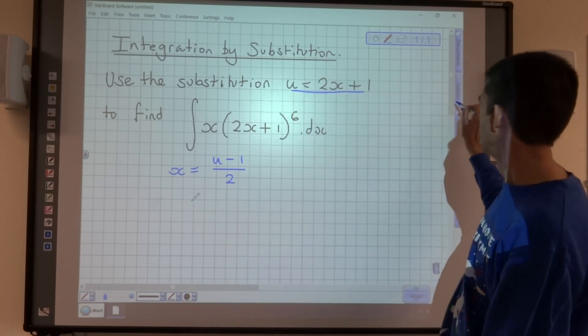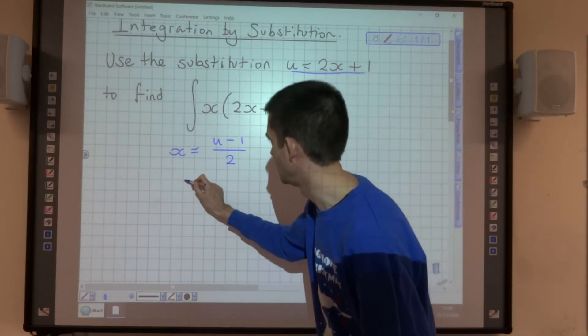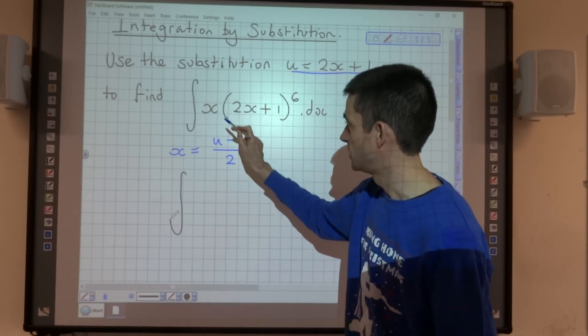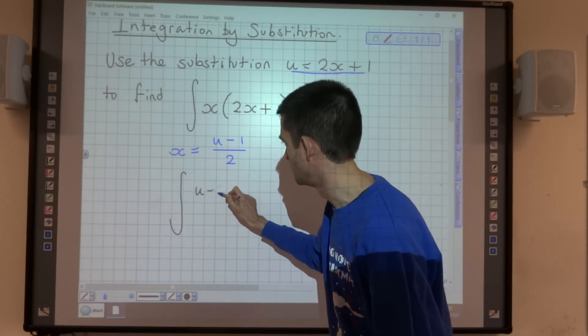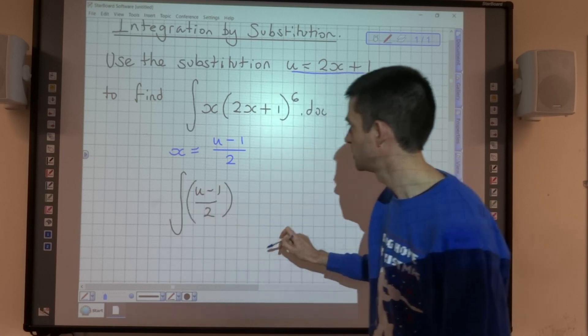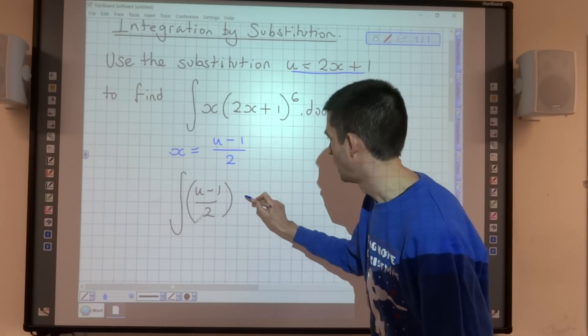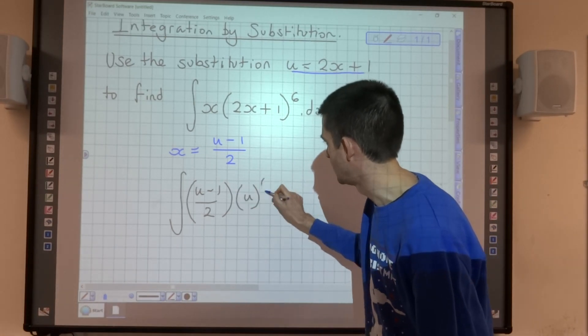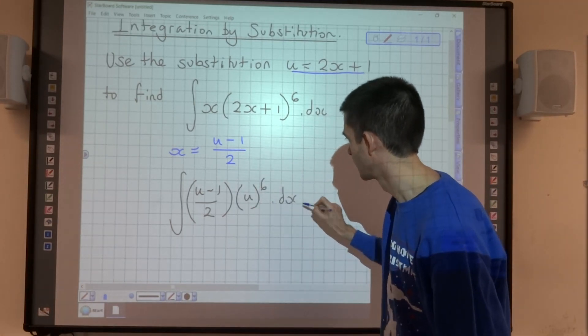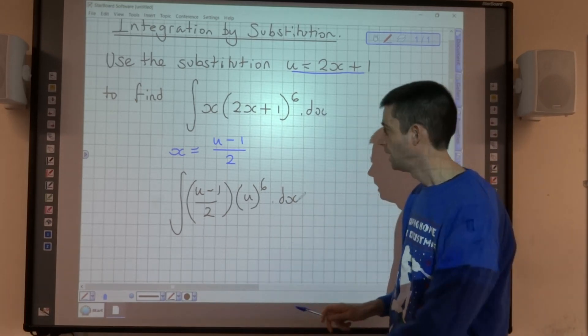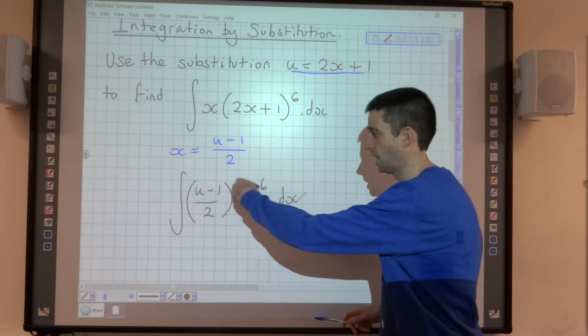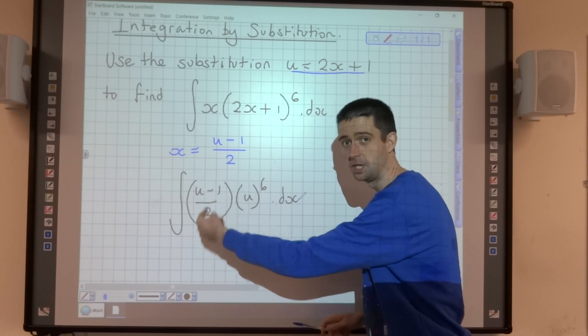So we could change this integral. So instead of x, we have u minus 1 over 2. Put that in brackets. And instead of 2x plus 1, we have u, and that would be to the power of 6. But the issue that we've got here is that it's with respect to x, and all of this is in terms of u.